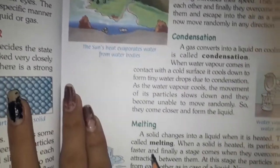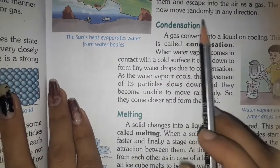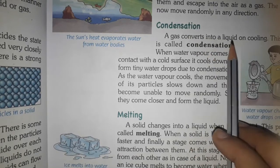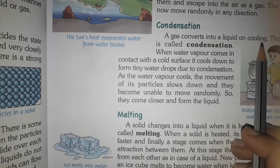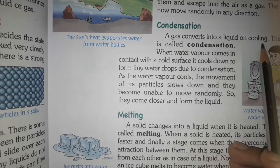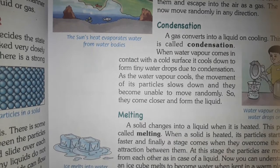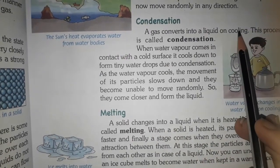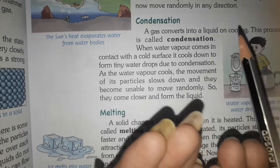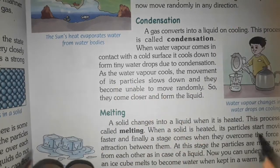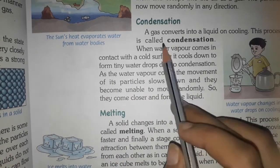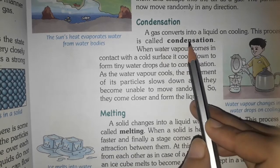Atmosphere में जाने के बाद वो clouds बन जाते हैं। Next process है — Condensation. Condensation: a gas converts into a liquid on cooling. Gas को ठंडा करोगे तो particles close-close आ जाएंगे, close आने से gas liquid में convert हो जाएगी। इस process को condensation कहते हैं।